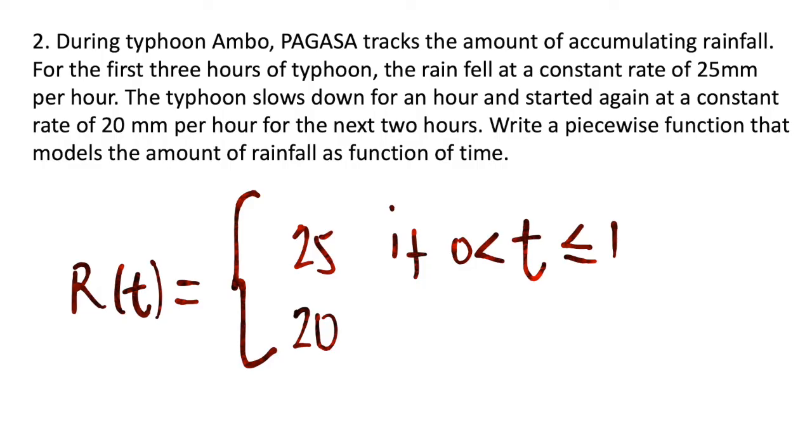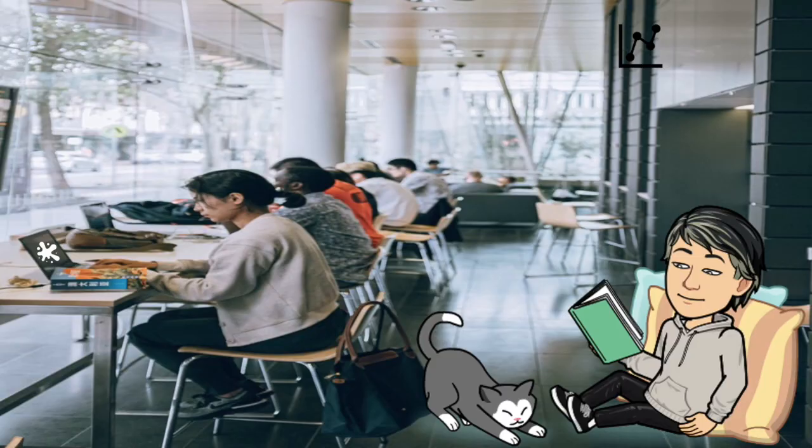Our second condition is another constant function: 20. The condition is the rainfall continues to pour more than 1 hour but less than or equal to 3 hours, which is equivalent to 2 hours. This would be the last example for this lesson.